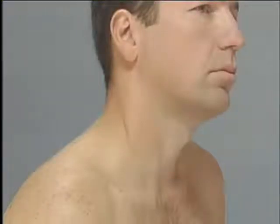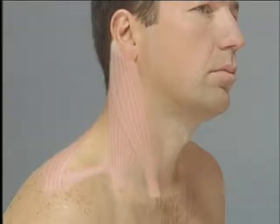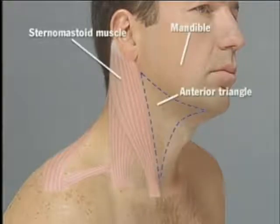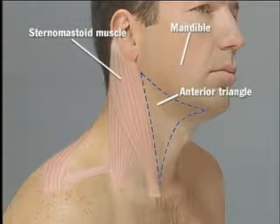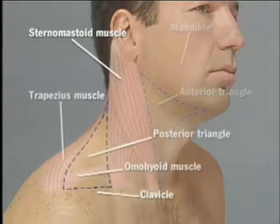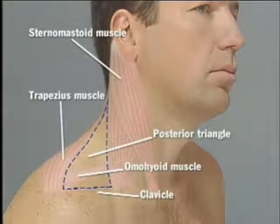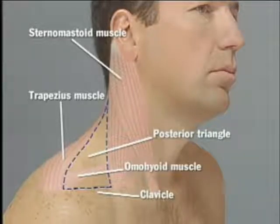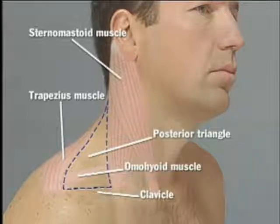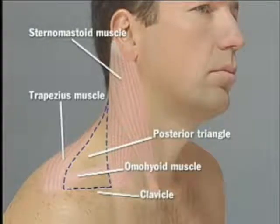Before examining the neck, let's look at the pertinent structures. For descriptive purposes, each side of the neck is divided into two triangles by the sternomastoid muscle. The anterior triangle is bounded above by the mandible, laterally by the sternomastoid, and medially by the midline of the neck. The posterior triangle extends from the sternomastoid to the trapezius and is bounded below by the clavicle. A portion of the omohyoid muscle crosses the lower posterior triangle — inexperienced examiners may mistake it for a lymph node or mass.